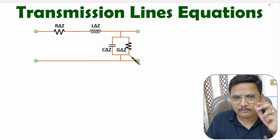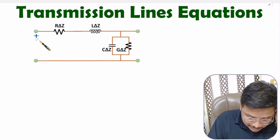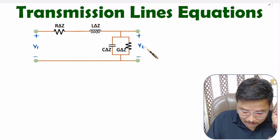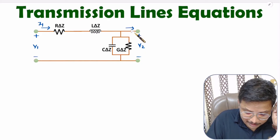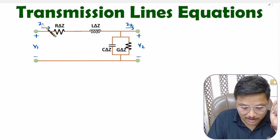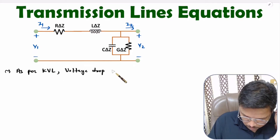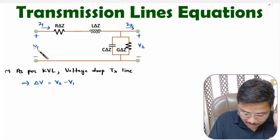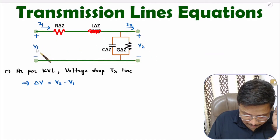To understand transmission line equations, we need to understand how much potential drop and how much current drop is happening across the transmission line. If we say voltage at the input is V1 and at the output is V2, then the voltage drop across the transmission line is V2 minus V1. V2 is lower than V1, so V2 minus V1 is negative.